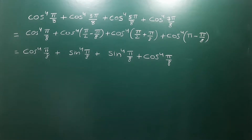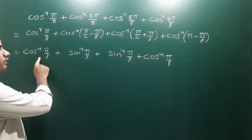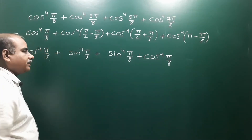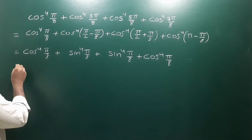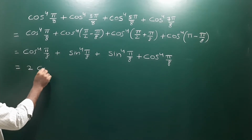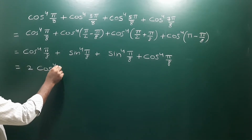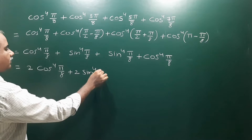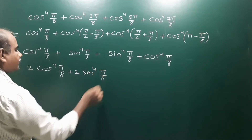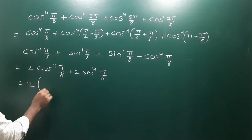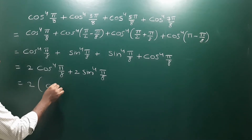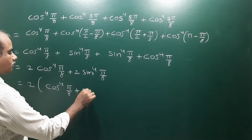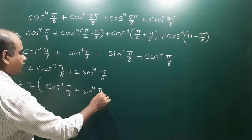Now we have two cos⁴(π/8) terms and two sin⁴(π/8) terms. This can be written as 2cos⁴(π/8) + 2sin⁴(π/8). Taking 2 as common, it becomes 2 times [cos⁴(π/8) + sin⁴(π/8)].